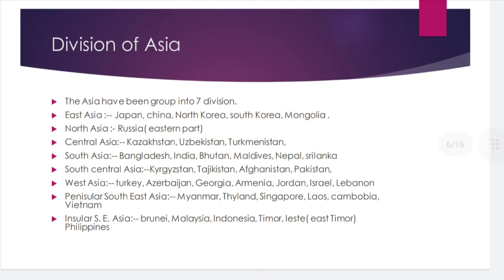Asia is grouped into seven divisions. East Asia includes Japan, China, North Korea, South Korea, and Mongolia. Russia lies in North Asia. Central Asia includes Kazakhstan, Uzbekistan, and Turkmenistan. South Asia includes Bangladesh, India, Bhutan, Maldives, Nepal, and Sri Lanka — we ourselves live in South Asia.